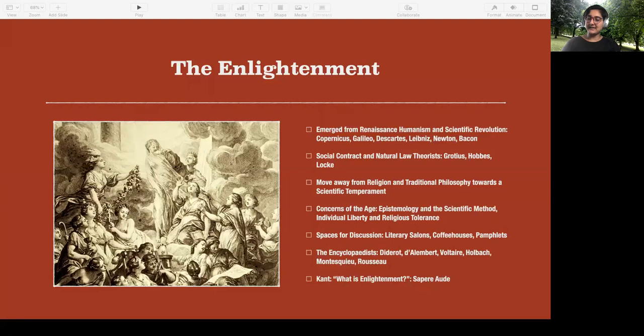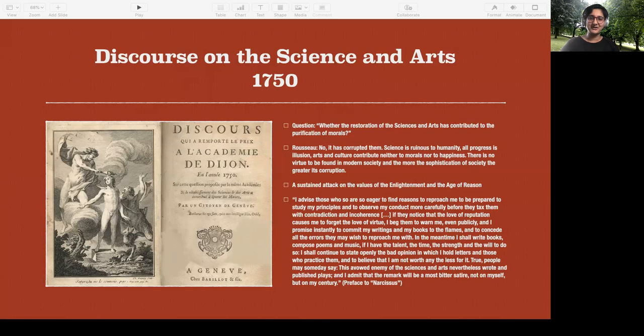So what does he say? So this is from the preface of Narcissus, and I put the whole quote there, I know it's taking up space on the slide, which I don't like to do, but I really wanted you to have this quote. So he says, so people obviously pointed it out even then, like we are pointing it out now. So he says, I advise those who are so eager, I'll correct the text out there, to find reasons to reproach me, to be prepared to study my principles and to observe my conduct more carefully before they tax them with contradiction and incoherence. If they notice that the love of reputation causes me to forget the love of virtue, I beg them to warn me, even publicly, and I promise instantly to commit my writings and my books through the flames. So dramatic.